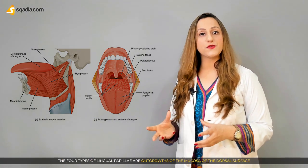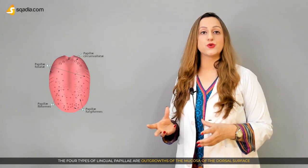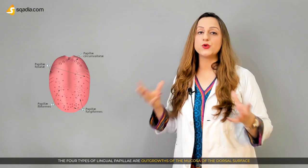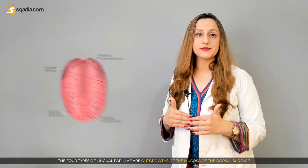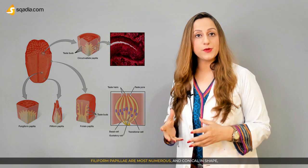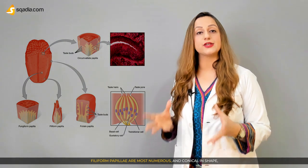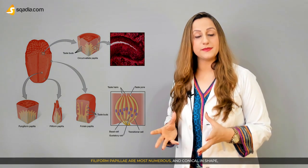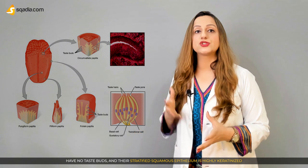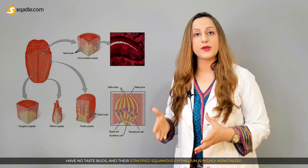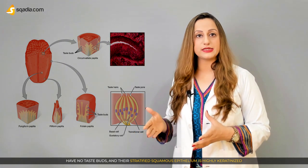The four types of lingual papillae are outgrowths of the mucosa of the dorsal surface. Filiform papillae are the most numerous and conical in shape. They have no taste buds, and their stratified squamous epithelium is highly keratinized.